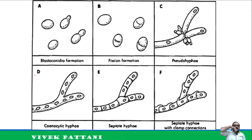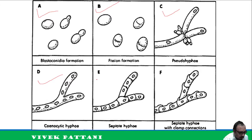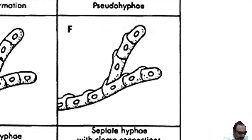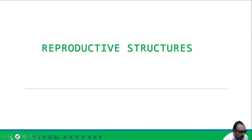There are various types of formation: blastoconidia, fission formation, pseudohyphae which are not true hyphae, coenocytic hyphae, septate hyphae, and septate hyphae with clamp connections. The first two structures are found in unicellular yeast. Septate hyphae with clamp connections show an extra clamped structure, which you can see in the diagram when zoomed in.